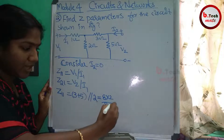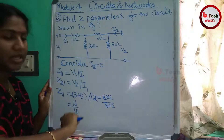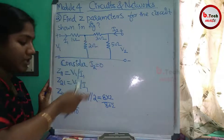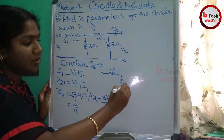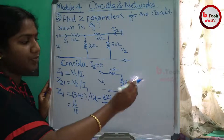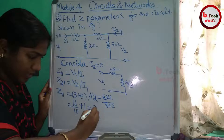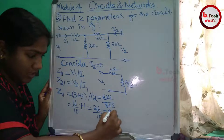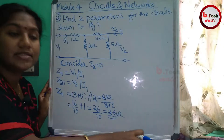The 8 ohm is in parallel with 2 ohm, giving 8 times 2 divided by 8 plus 2, which is 16 by 10. That 16 by 10 is a single equivalent resistance. It is then in series with the 1 ohm, so 16 by 10 plus 1 gives 26 by 10, which is 2.6 ohm. Therefore Z11 is 2.6 ohm.